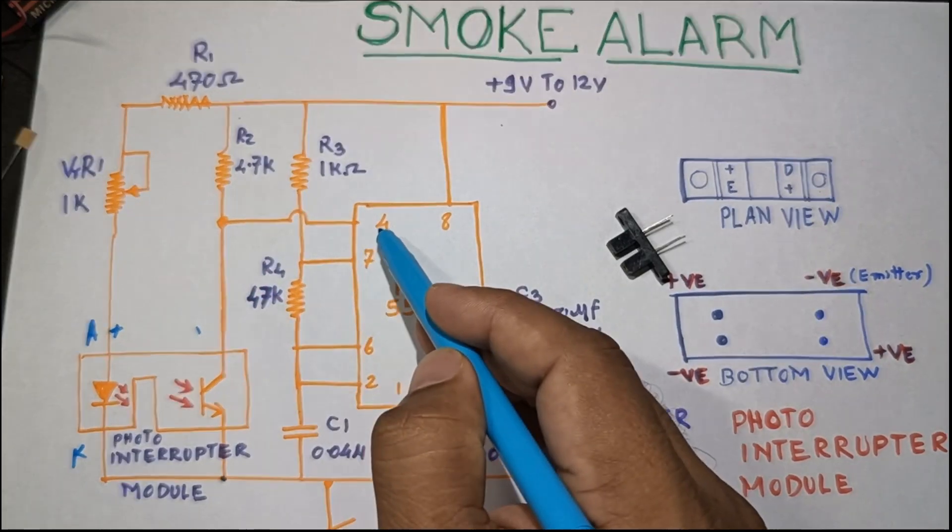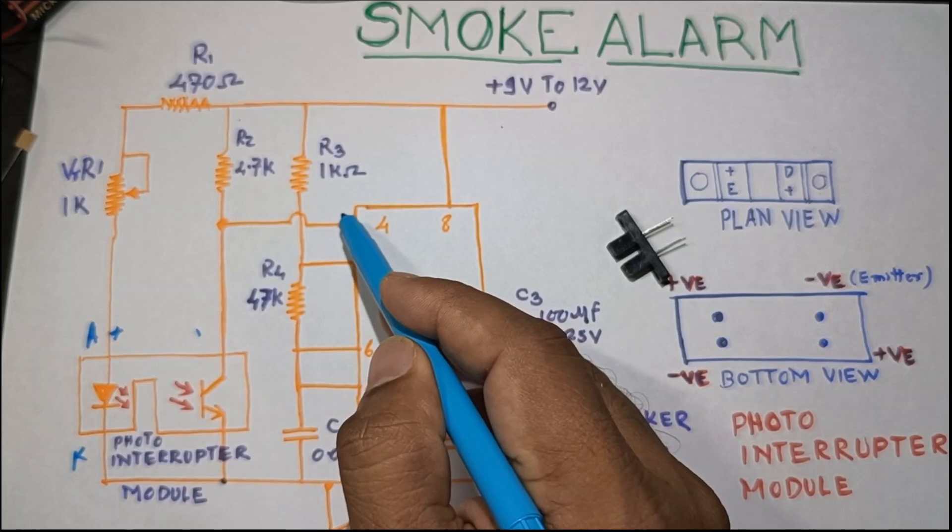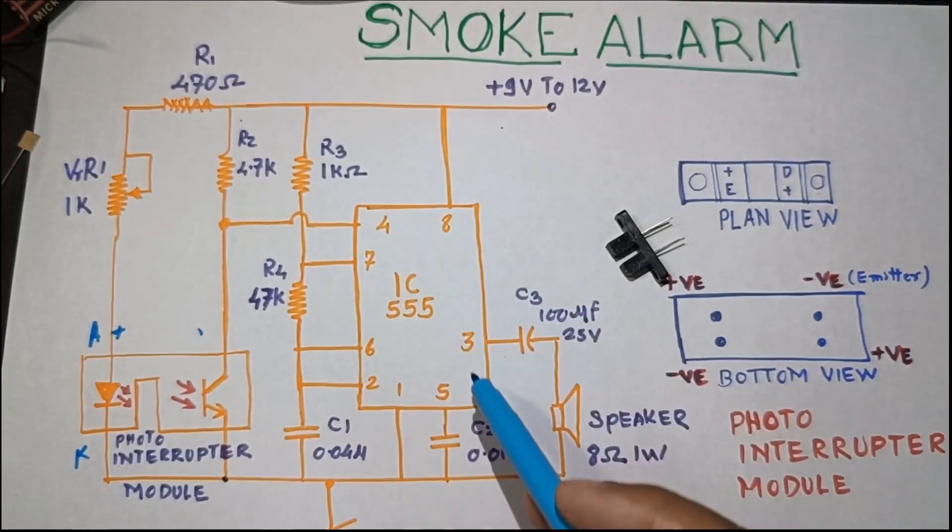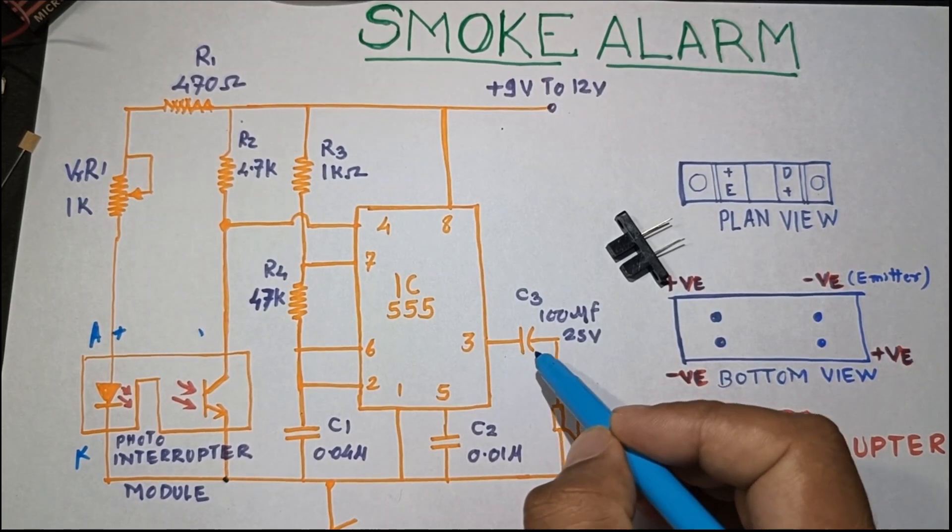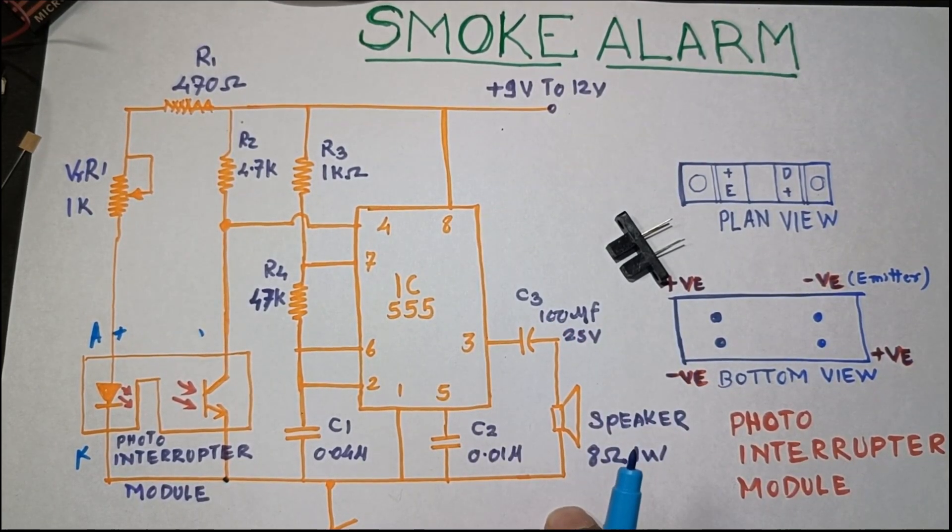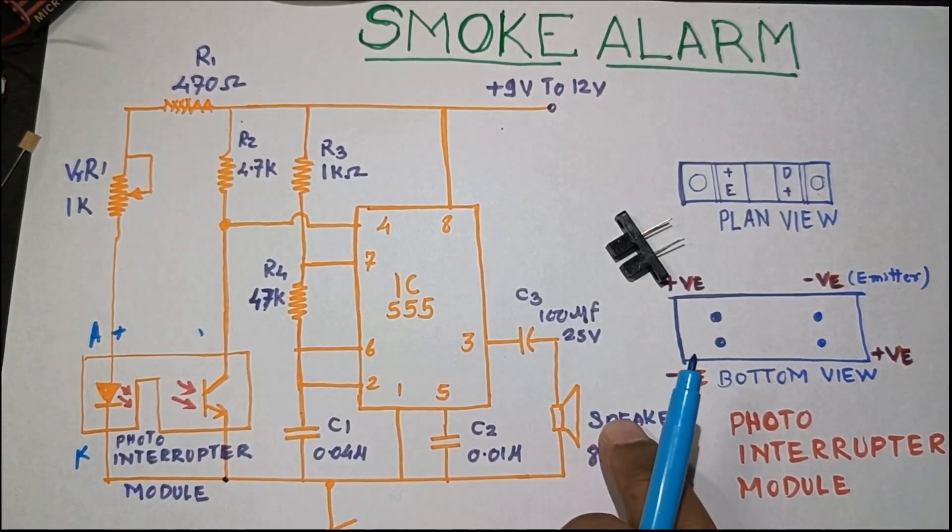When this transistor is turned on, the voltage and current flows towards the ground. The voltage at pin number 4 is zero, which is nothing but the reset pin of the IC555. Hence, the output of this IC555 is also zero, so the speaker is in the off mode.